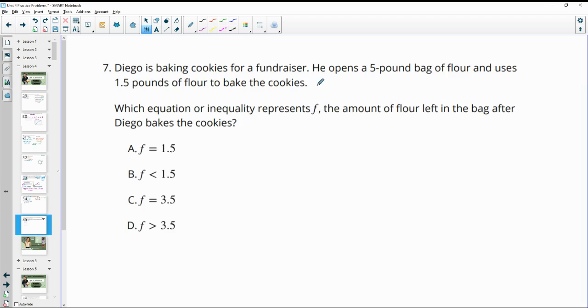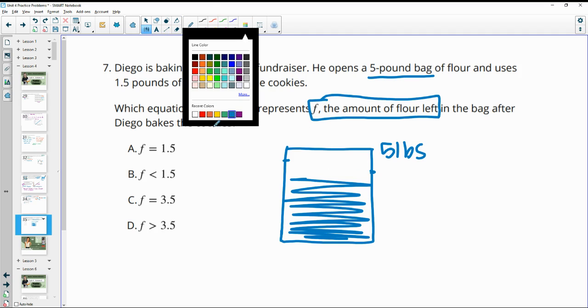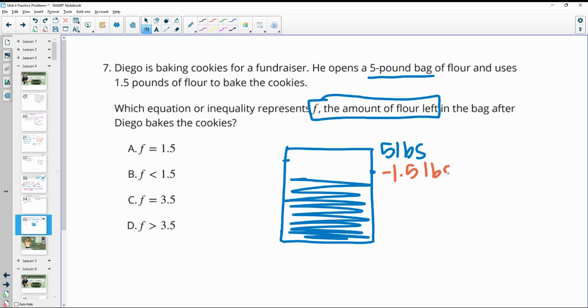Number seven, Diego is baking cookies for a fundraiser. He opens a five pound bag of flour and uses one and a half pounds of flour to bake the cookies, which equation or inequality represents f, the amount of flour left in the bag after Diego bakes the cookies. So we've got this bag of flour, and it is full when he opens it. And so in this bag, we have five pounds of flour. Then he goes to bake cookies and he uses up a pound and a half. So he uses up a pound and a half of the flour and we want to know how much is left. So using up means that he's subtracting 1.5 pounds. And that's going to give him what's left over here is 3.5 pounds. So that is equal to F. So F is equal to three and a half pounds is what he has left in the bag.